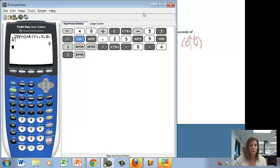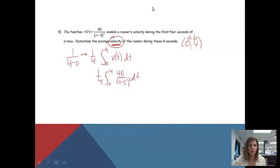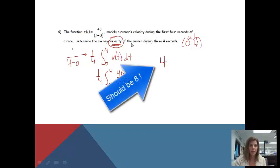So going back to my example, the average velocity during this race was 4. It doesn't tell me what the units are - I could put meters per second or feet per second. For this part, I'm not exactly sure, but that was the average velocity. So hopefully now you can determine the average value of a function.